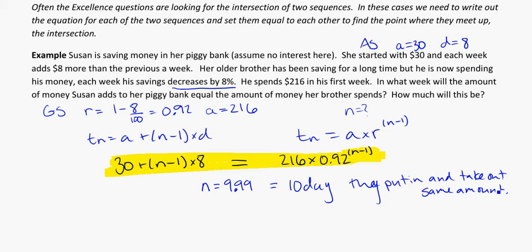Part two of this question is asking us, how much will that be? Well, if we know that it's going to be on the 10th day, we can use either of these two sequences to figure out how much it will actually be. So let's use Susan's, and figure out on the 10th day, she's going to start with 30, and we'll put in the 10 for n, times 8. And we'll find out, and we plug this into our calculator, that you'll get $102.